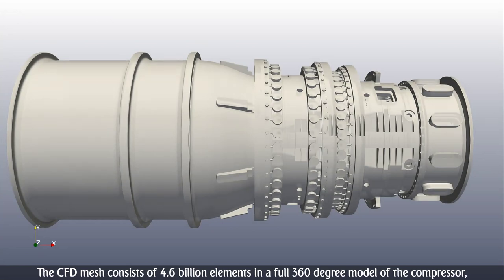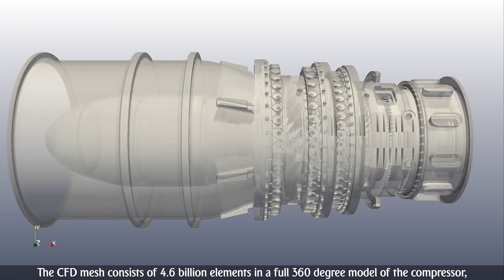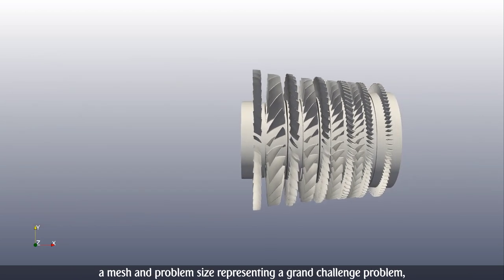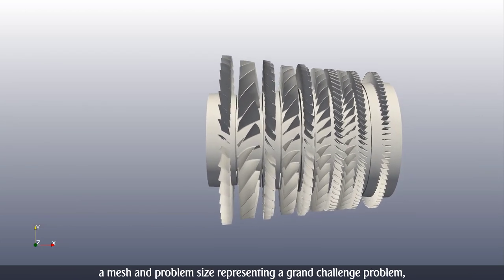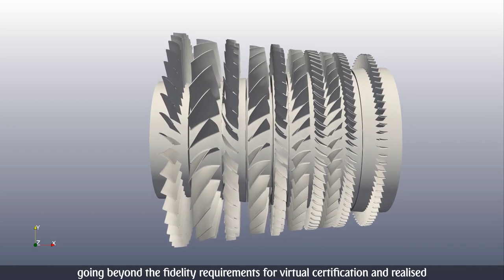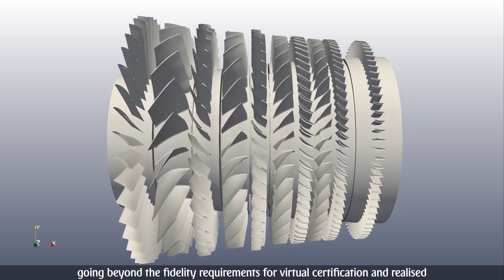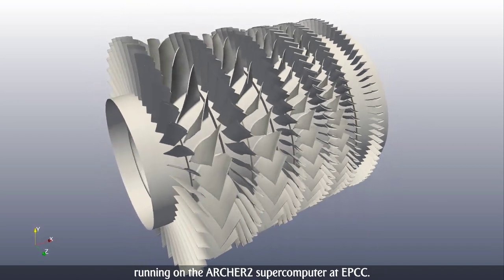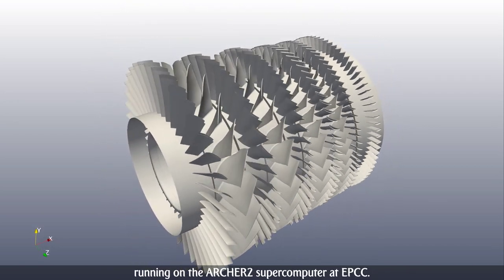The CFD mesh consists of 4.6 billion elements in a full 360-degree model of the compressor, a mesh and problem size representing a grand challenge problem, going beyond the fidelity requirements for virtual certification, and realized for the first time within a tractable time-to-solution running on the Archer II supercomputer at EPCC.